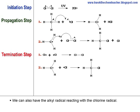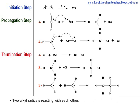It is also possible to have one chlorine radical and one alkyl radical coming together to give our chloroalkane molecule. Finally, it is also possible to have two alkyl radicals coming together to form a longer alkane molecule.